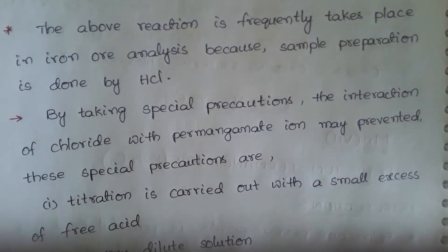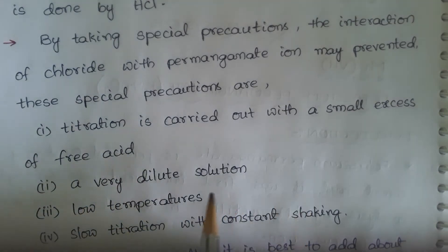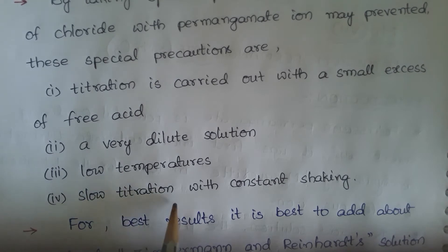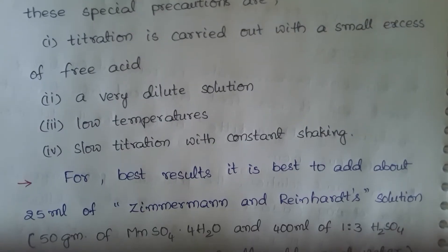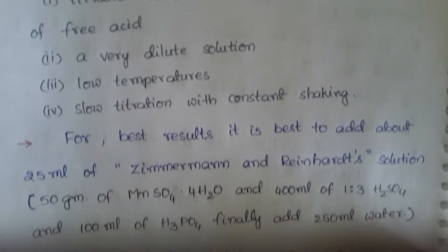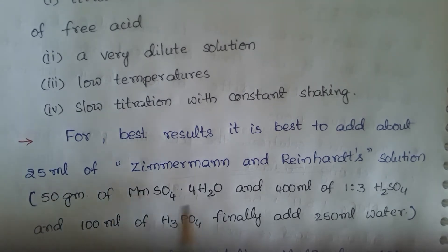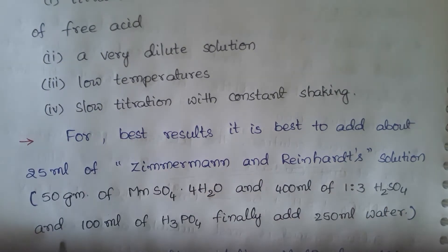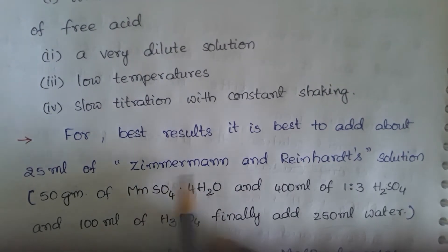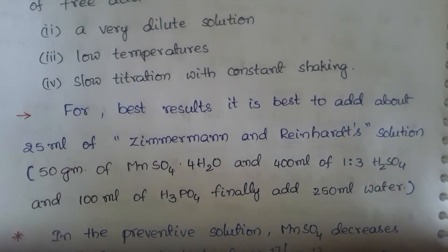The special precautions are: titration is carried out with a small excess of free acid — a very dilute HCl solution. You can titrate at low temperatures with slow titration and constant shaking. For best results, it is best to add about 25 ml of Zimmermann-Reinhardt solution, which is made by mixing 50 grams of MnSO4, 400 ml of H2SO4, and 100 ml of phosphoric acid, then finally adding 250 ml water.